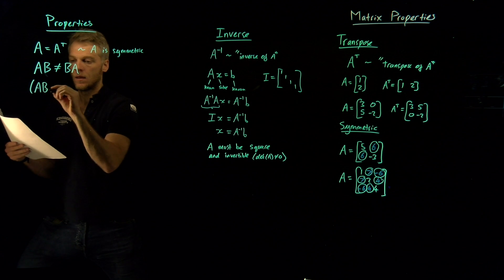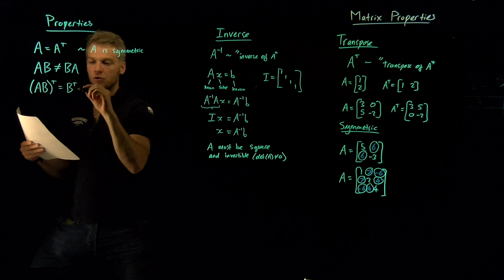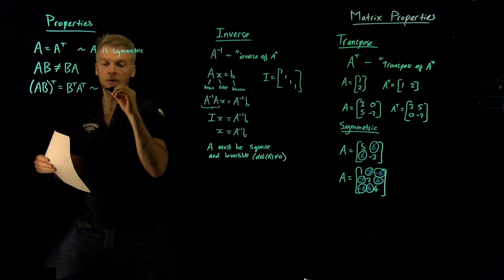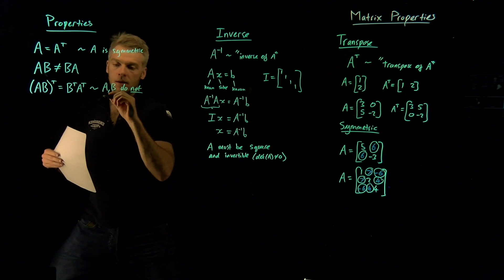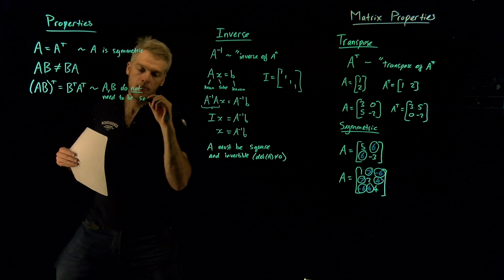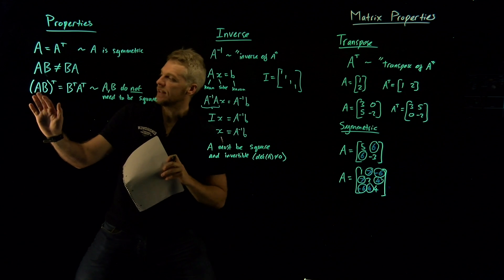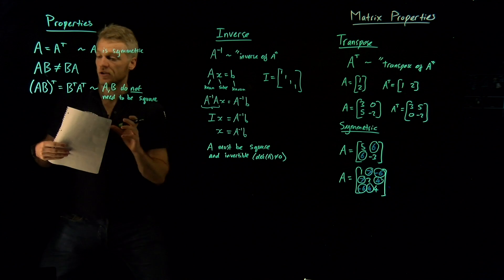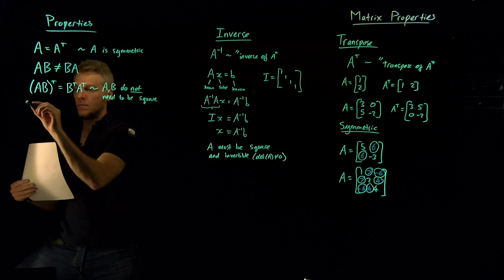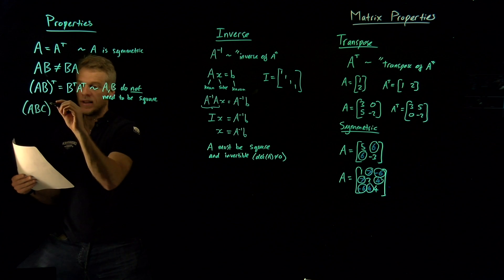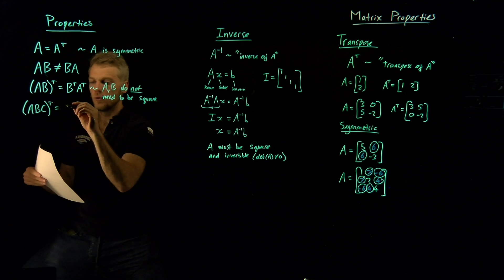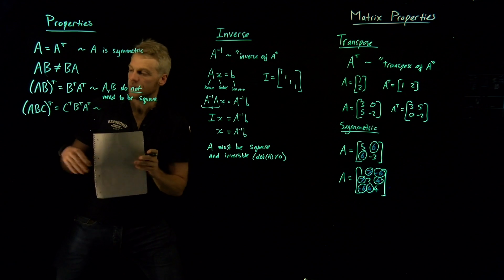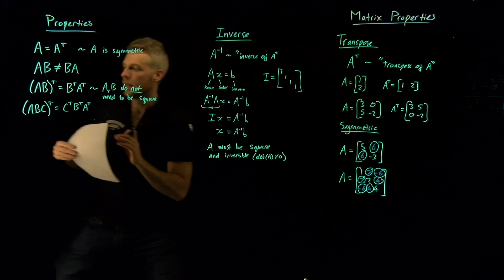Another thing I would like to talk about is another property of the transpose, which is that AB transpose is equal to B transpose A transpose. And notice that, so A and B are matrices. They need not be square. In fact, let me write that down. A and B do not need to be square in order for this property to hold. And what's so interesting is if I take the transpose of two matrices multiplied by each other, then the order of the matrices flip, and we just transpose each of them individually. So that's an interesting property. And in fact, you can prove from this result a more general result, which is that ABC transpose is equal to C transpose B transpose A transpose. And once again, A, B, and C do not need to be square in this case. So that's an interesting result here.